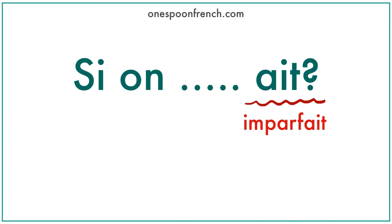You might have to memorize all the forms depending on the subject later to get more improved. But as of now, just the third person singular verb form, because 'on,' which is commonly replaced with 'nous' in casual French, belongs to a third person. And the French 'si' means 'if' in English. So if you say 'si on,' it would literally mean 'if we did something.' But you use this expression in French conversation when you want to suggest something.